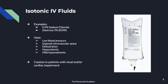Isotonic IV fluids — such as 0.9% sodium chloride (normal saline) and D5W — are used for patients with low blood pressure because they expand the intravascular space. Isotonic fluids stay in the blood vessel without causing a fluid shift in or out. They are a good choice for patients with low blood pressure, dehydration, hypovolemia, or mild hyponatremia. You still want to be careful in patients with renal or cardiac impairment.